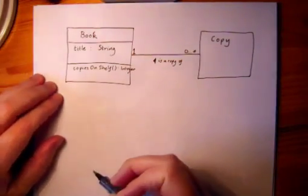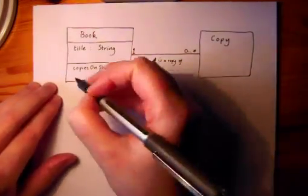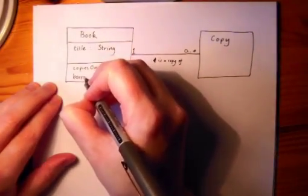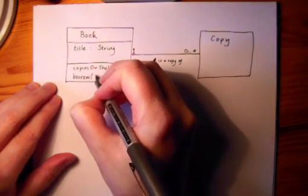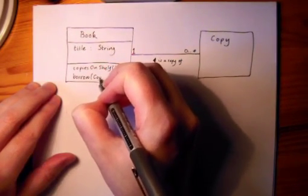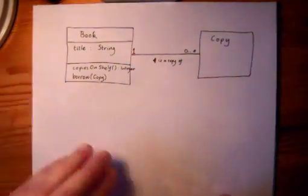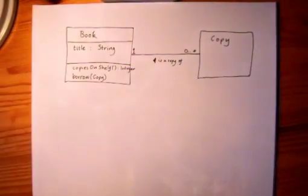And let's also suppose that it needs to be able to understand a message borrow, which is the message that something is going to send it to inform it that a particular copy of it has been borrowed. So it's going to take a copy as argument. That gives us the basic information about the attributes and operations that we have in mind at this stage of the design.